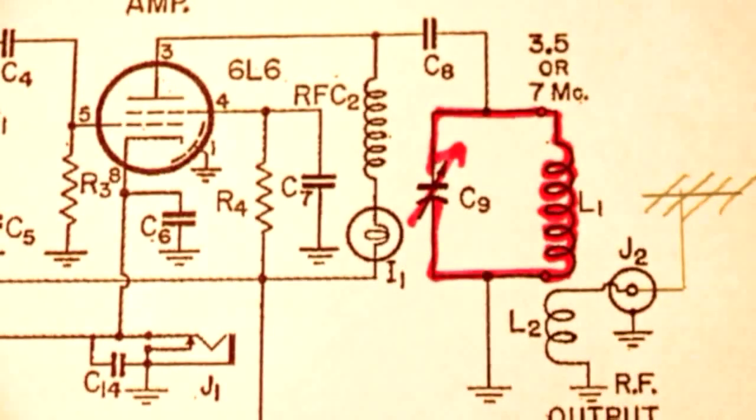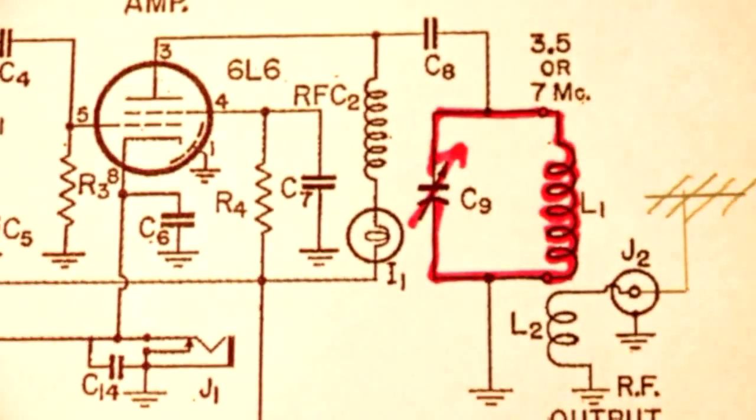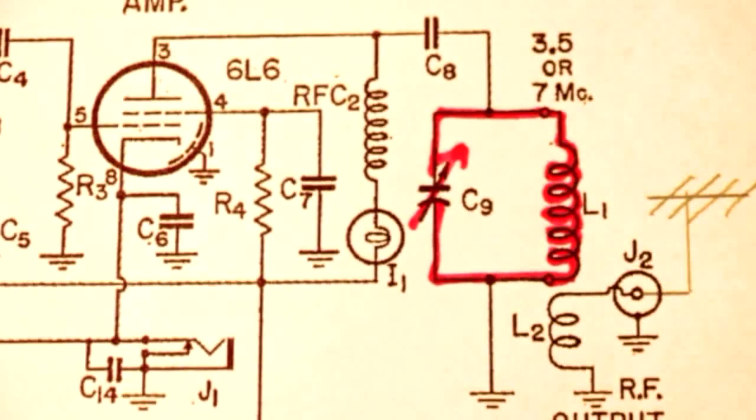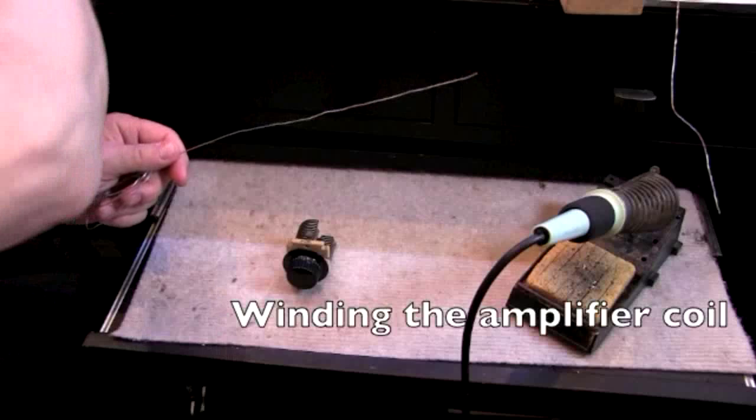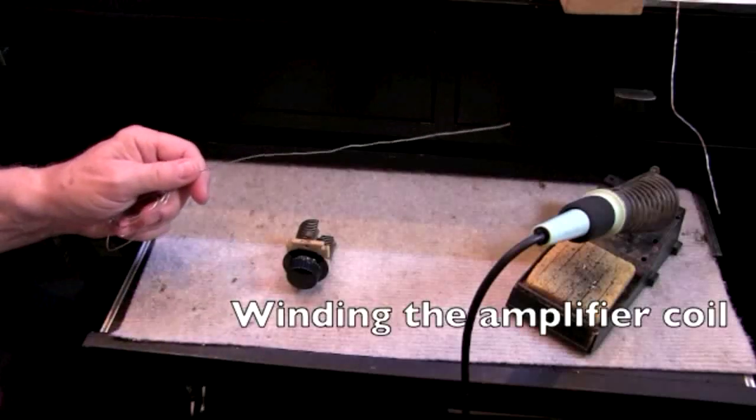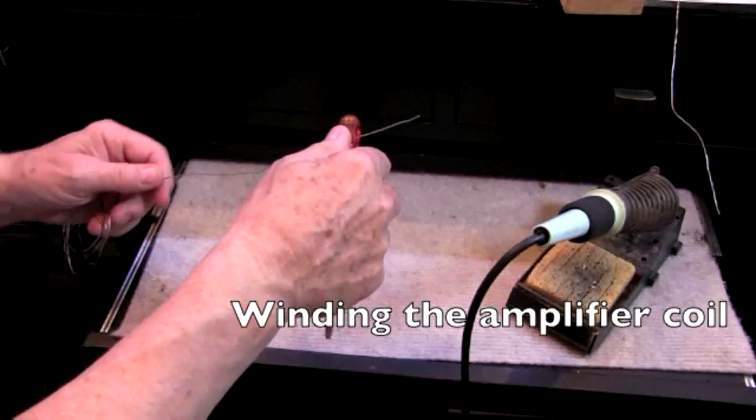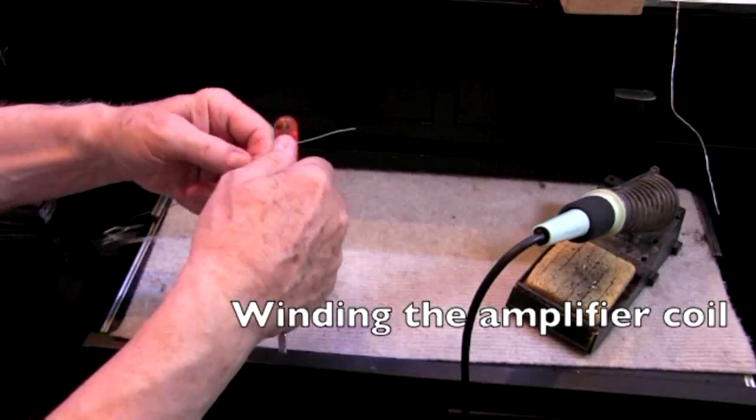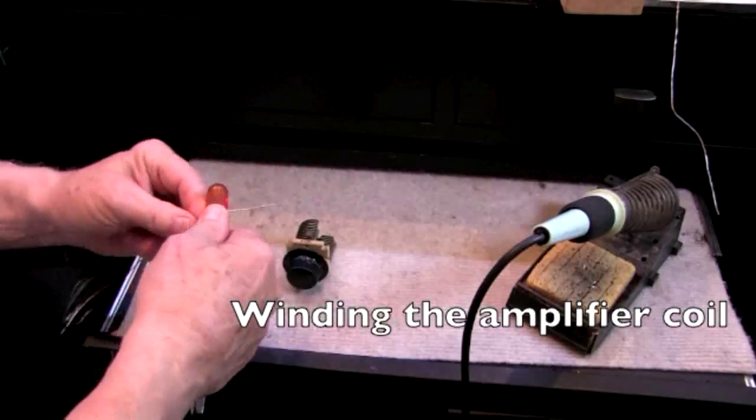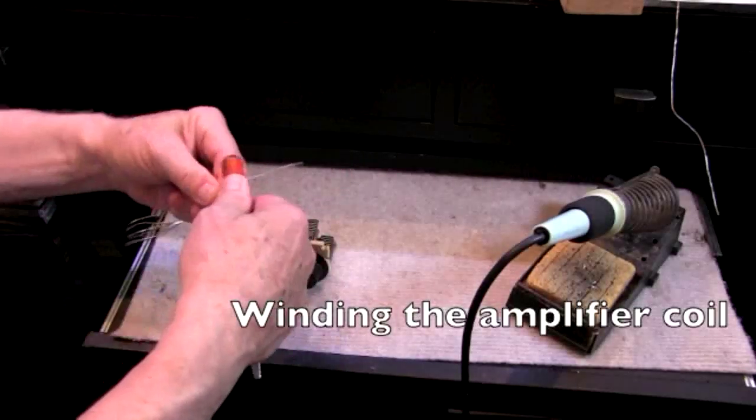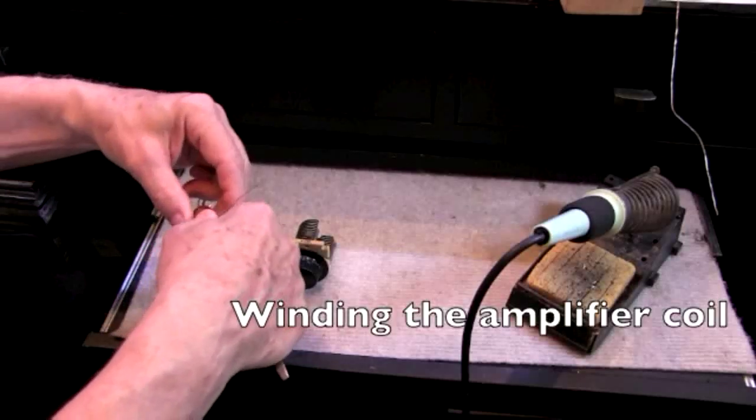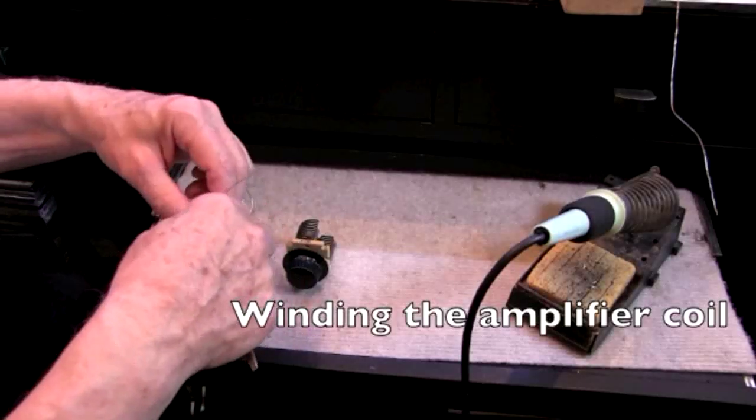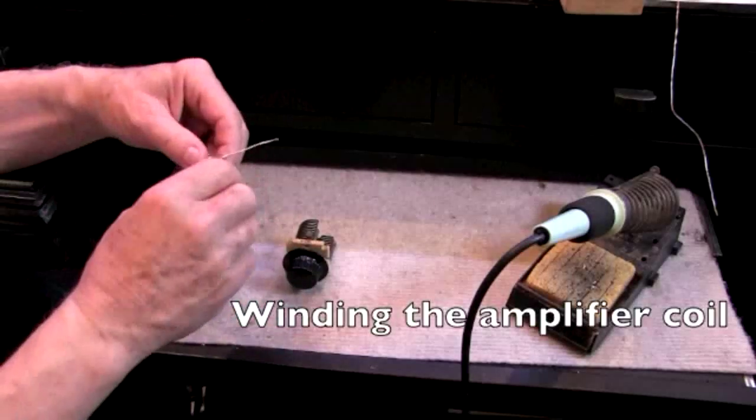But tonight we're going to focus on the tank coil, the coil and the capacitor that actually tune the transmitter for where you're going to be. Well, you've got to know what that coil is, so you've got to wind it. Take a piece of solid wire and real sophisticated, I use the end of a screwdriver or whatever. I just kind of judge how big this coil is going to end up being.